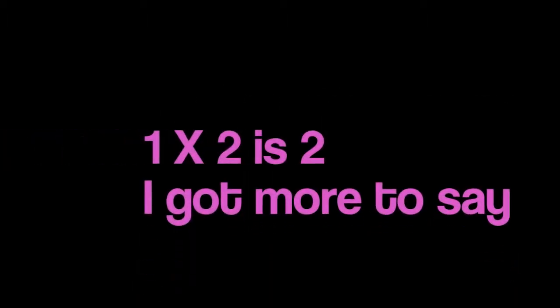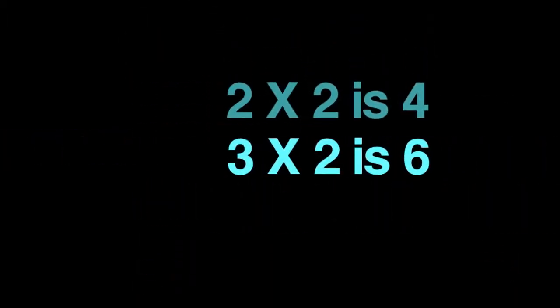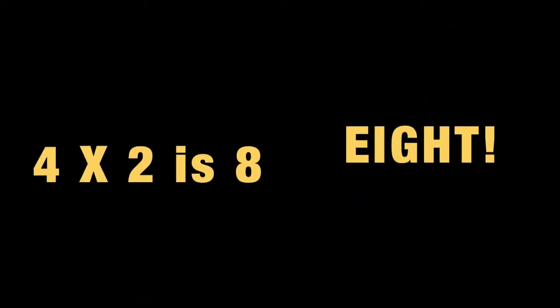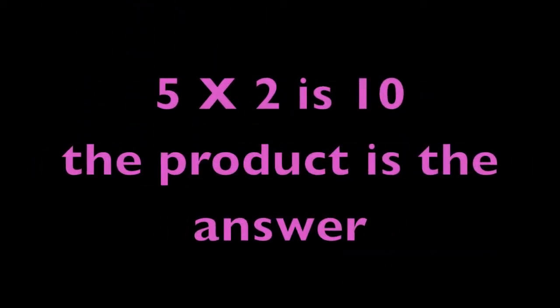Multiply two's easy as an A. One times two is two. I get more to say. Two times two is four. Three times two is six. Four times two is eight. Five times two is ten. The product is the answer. Product of six and two is twelve. Look at my swagger. Seven times two, fourteen. Eight times two, sixteen. Nine times two, eighteen. Product of ten and two is twenty.